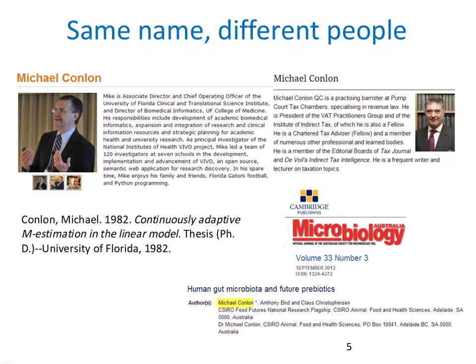Michael Conlon is a relatively uncommon name, but consider that in China 275 million people have the surname of Li, Wang, or Zhang, and that is not including millions of overseas Chinese. The chances of ethnic Chinese having the same name, especially in the abbreviated form used in journal articles, is very high. We need other identifying attributes such as institutional affiliation and discipline, if not photos, to disambiguate names.